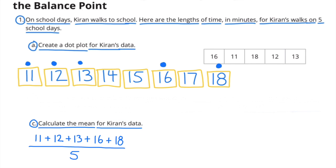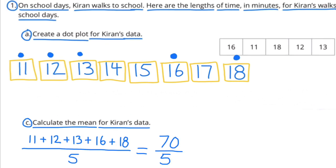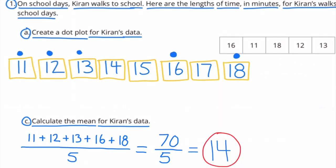11 plus 12 plus 13 plus 16 plus 18 divided by 5 equals 70 divided by 5. 70 divided by 5 is 14. The mean for Kieran's data is 14.